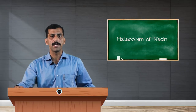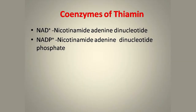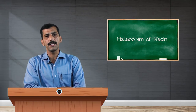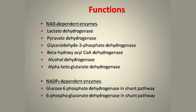The major function of niacin is its role as a coenzyme. These coenzymes are required for the metabolic reactions of carbohydrates, proteins, and lipids. The major two coenzymes of niacin are nicotinamide adenine dinucleotide and nicotinamide adenine dinucleotide phosphate, that is NAD+ and NADP+. The major functions of these coenzymes in metabolism can be studied under three groups, starting with NAD+ dependent enzymes.